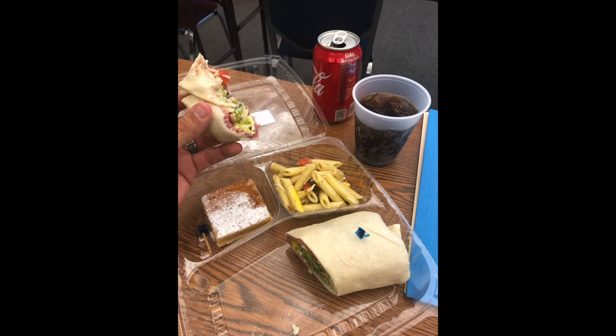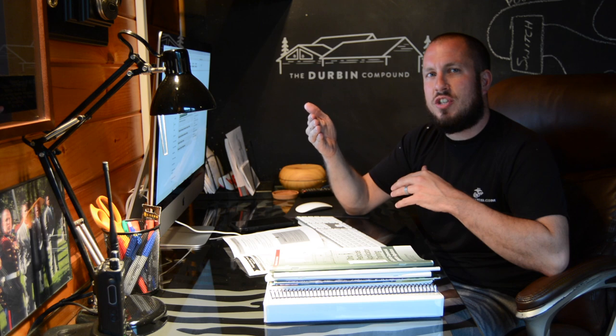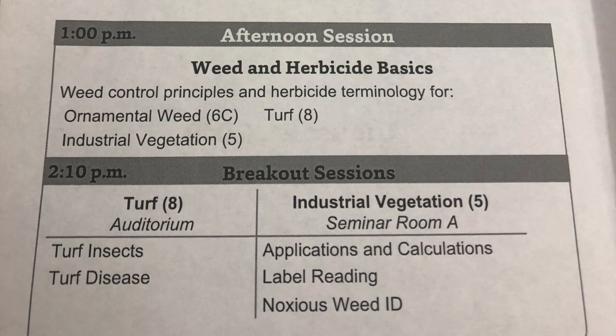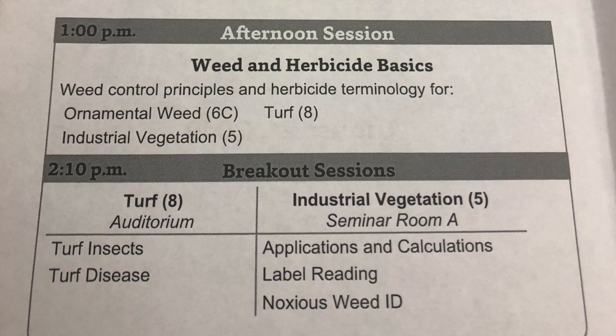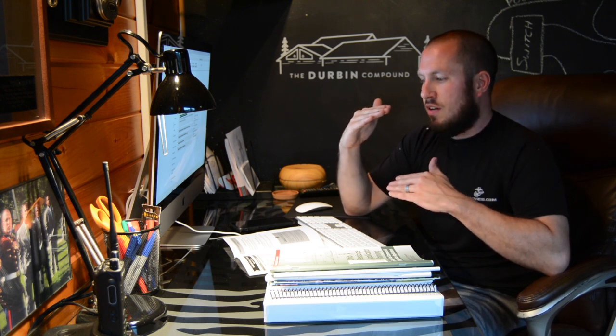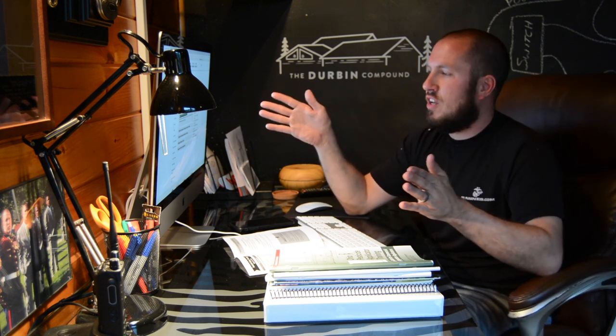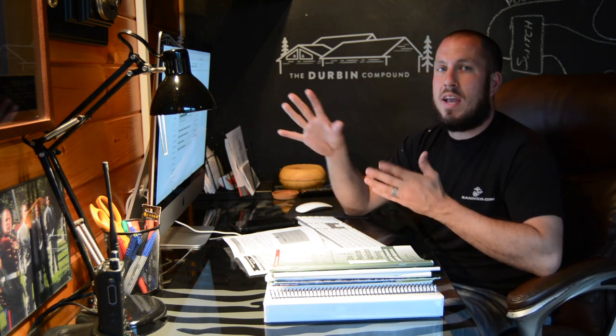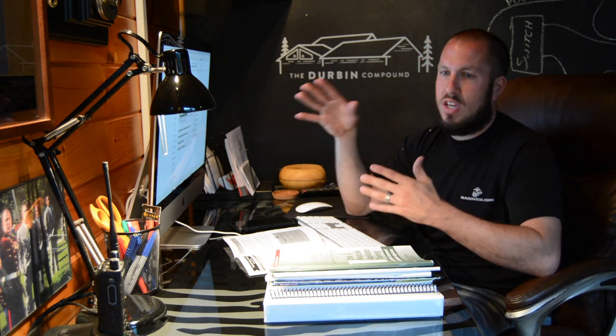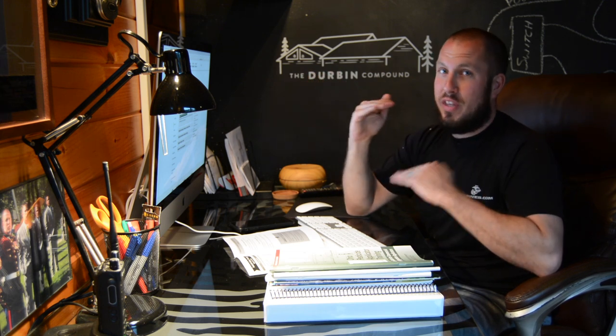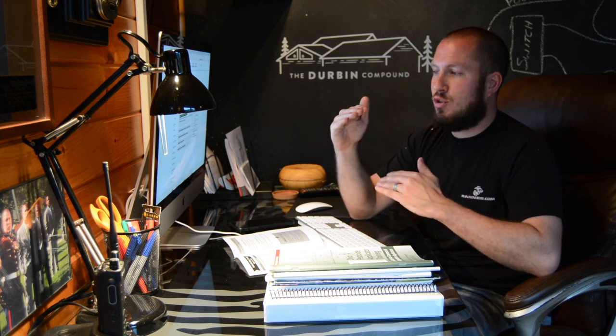Lunch was a very good catered meal. Then we kicked off the afternoon session at 1 o'clock — at 1300 it got a little real. She started laying on the information and you could tell we had switched gears into the commercial applicator license. She expected the real players were there to get it done. We went through weed control principles and herbicide technology and terminology, then broke out into turf or industrial vegetation. I went to the industrial vegetation side for category 5. From 1 to 3:30 they were throwing so much information at you — I was a little overwhelmed.